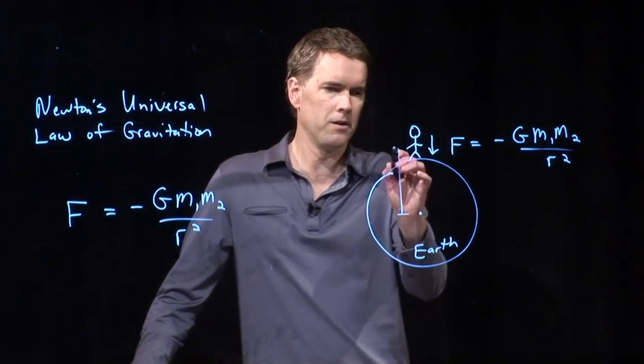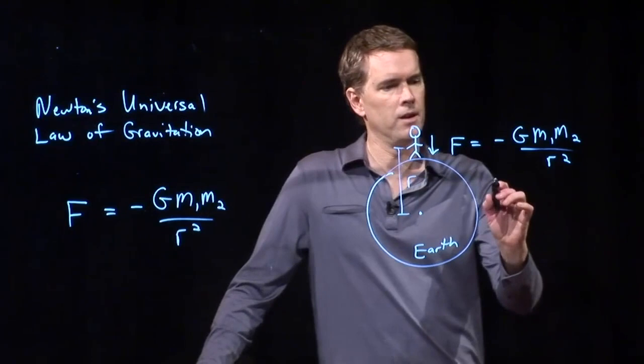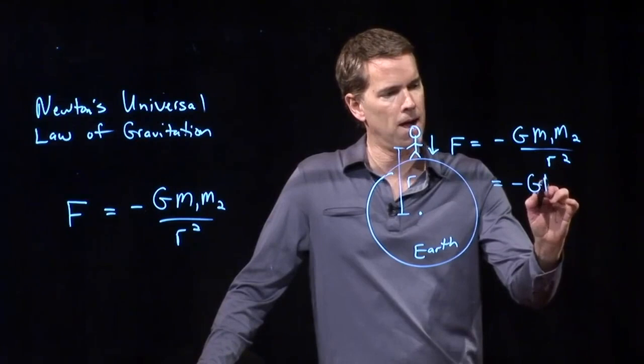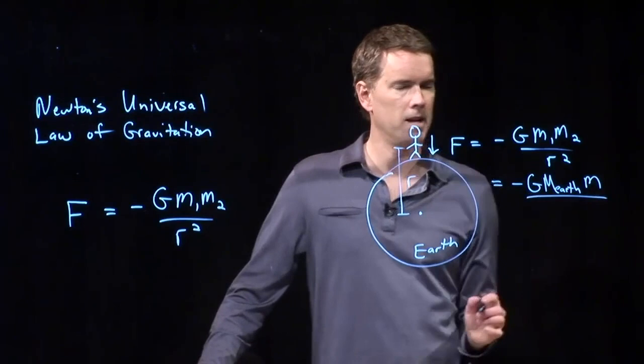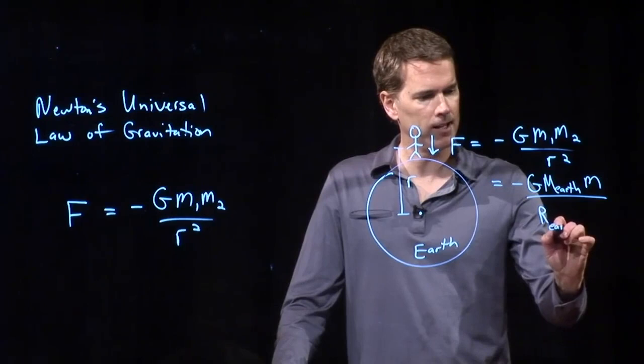How far am I from the center of the Earth? And so what's the force? It's negative G times the mass of the first object, which is the Earth, times the mass of the second object, which is me, divided by r squared, where r is the radius of the Earth.